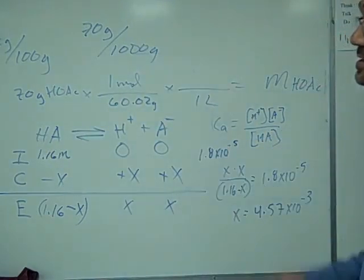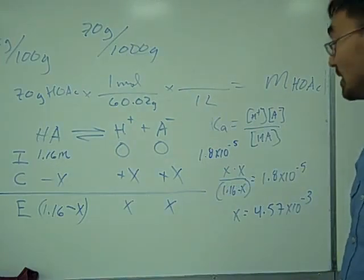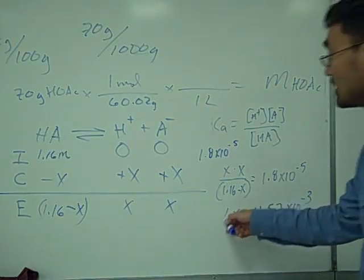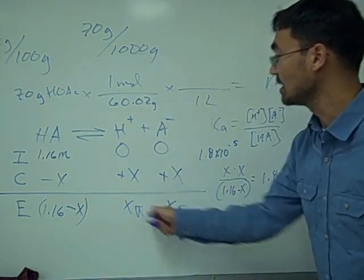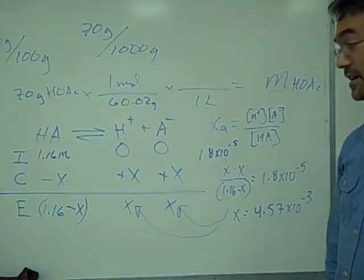In this case, our original question is, what's the pH of a vinegar solution? So that x value represents the concentration of the anion, but it also represents the concentration of the hydrogen ion.